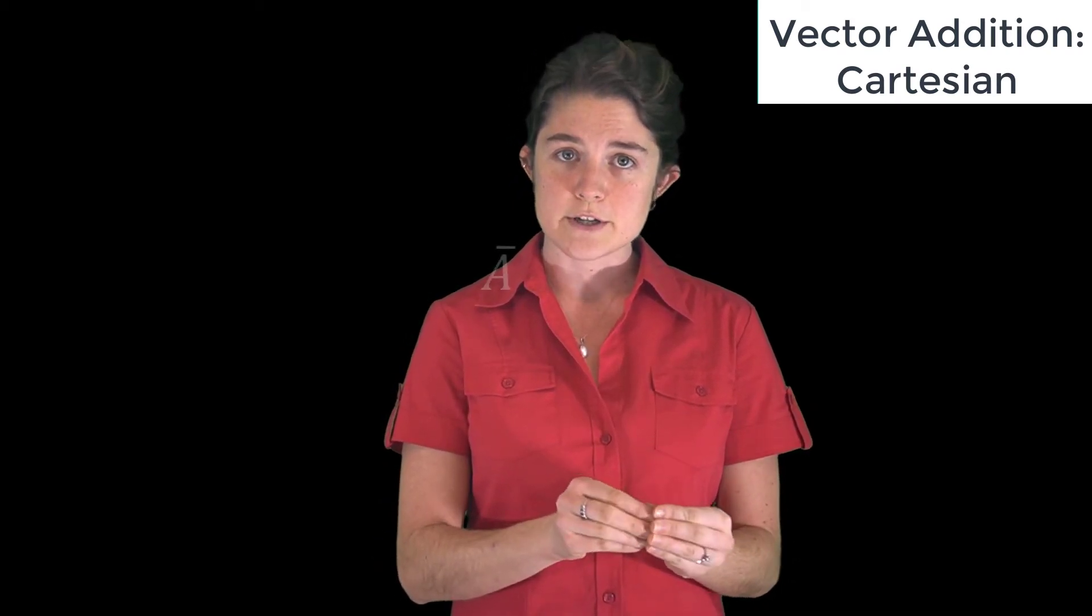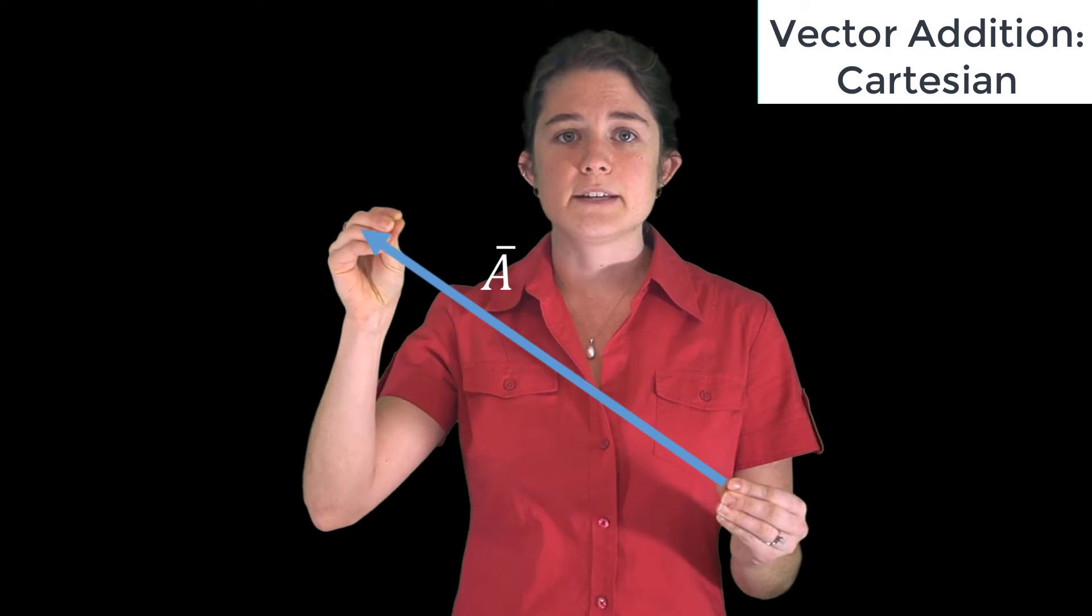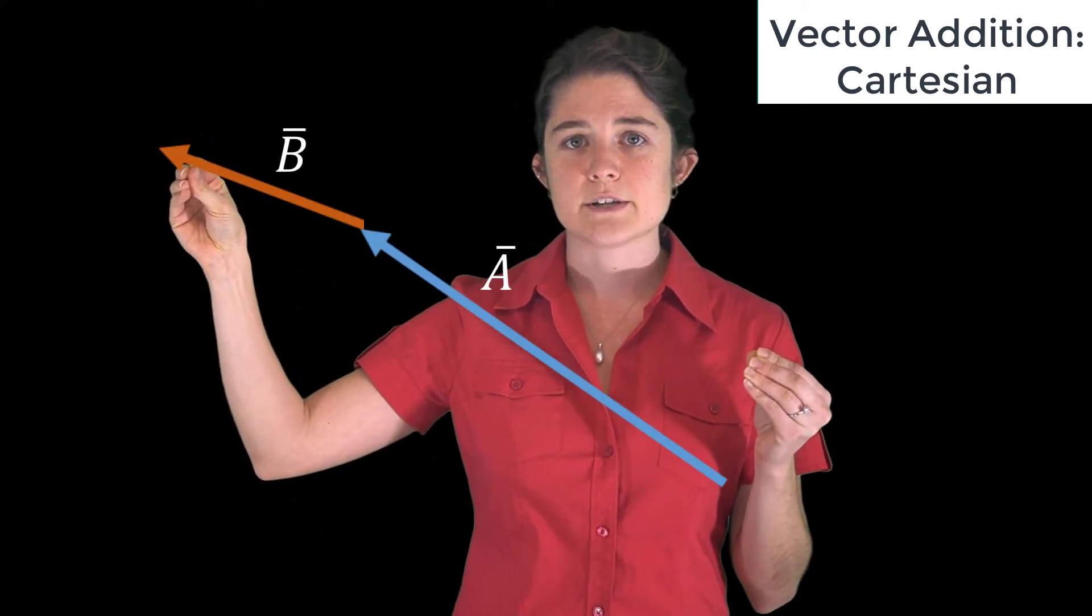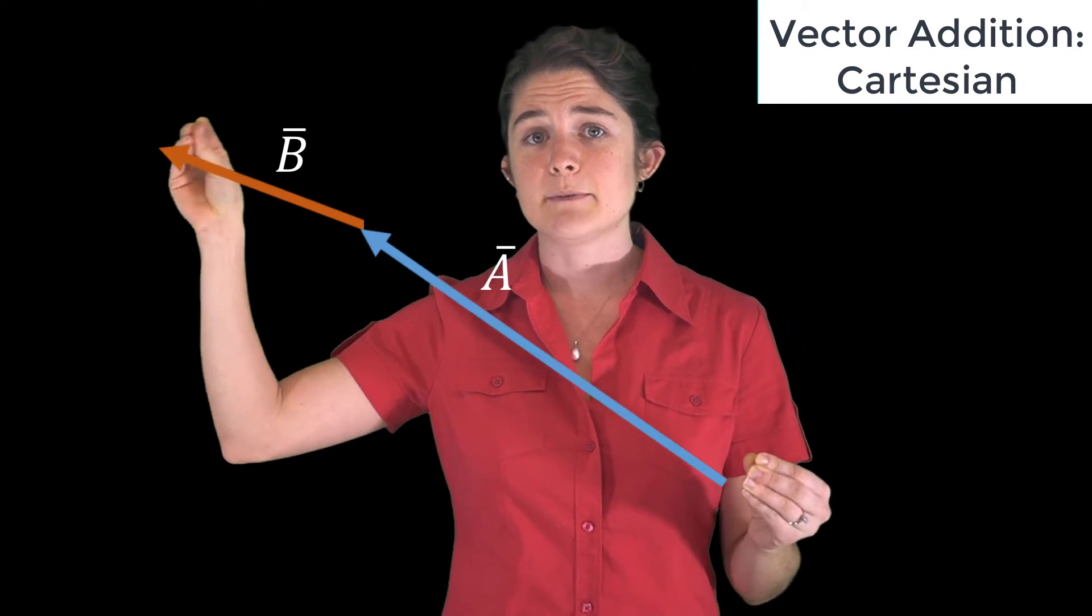The sum may also be found graphically. In this case you draw both vectors, one originating at the origin and the other originating at the tip of the first. The sum of the two vectors is the vector that points all the way from the origin to the tip of the second vector.